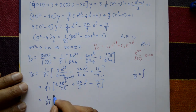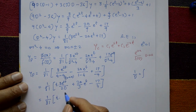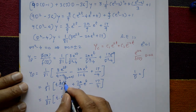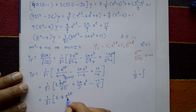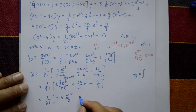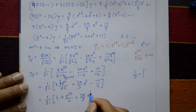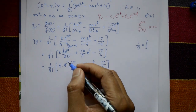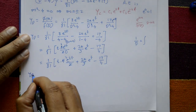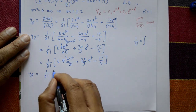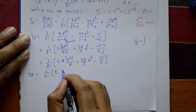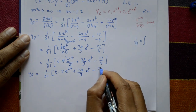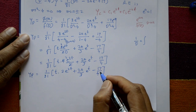So yp = (1/81)[ t·(2·(e^{2t}/2)·4) + 20/3·e^t - 17/4 ]. Integrating e^{2t} gives e^{2t}/2. Therefore the particular integral is yp = (1/81)[ 2t·e^{2t} + (20/3)e^t - 17/4 ].